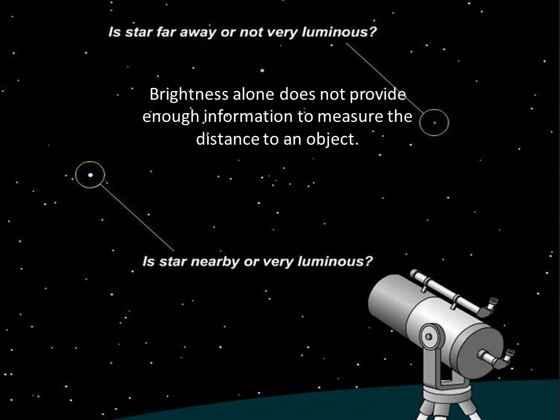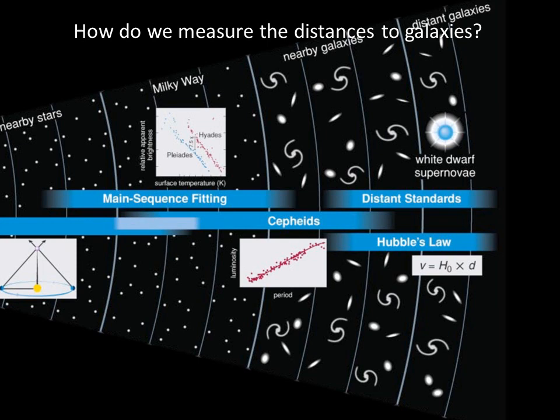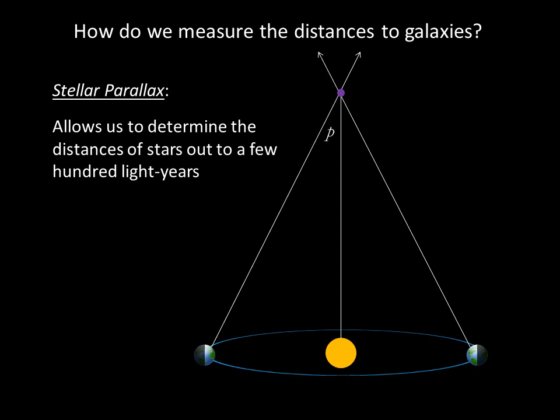This is our problem, summed up here. Brightness alone does not provide enough information to measure the distance to an object. A bright star could be bright because it's nearby, or it could be bright because it's intrinsically luminous. To determine astronomical distances, we depend on a chain of methods in which each step allows us to measure greater distances in the universe.